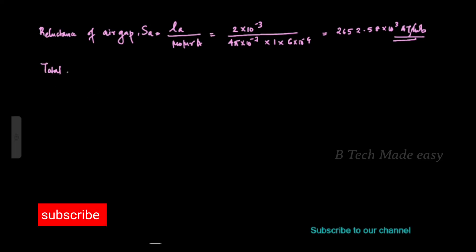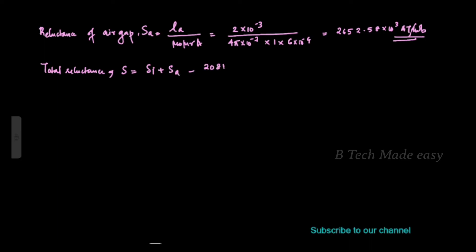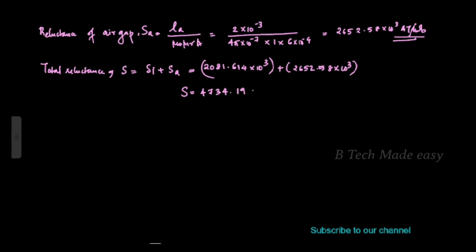Total reluctance S equals SI plus SA, that is the reluctance of the iron ring 2081.614 into 10 raise to 3, plus the air gap reluctance 2652.58 into 10 raise to 3. Calculating the total value gives 4734.19 into 10 raise to 3 ampere turns per Weber.